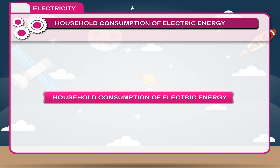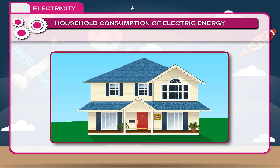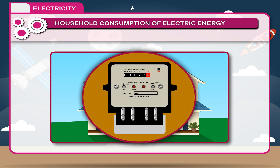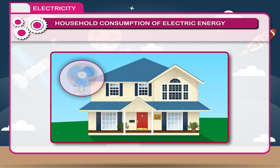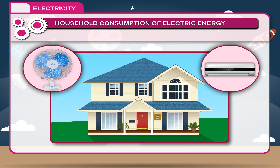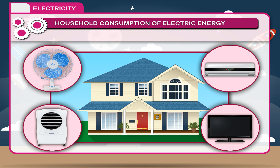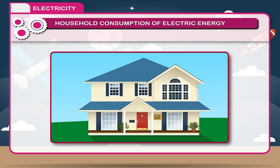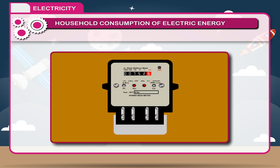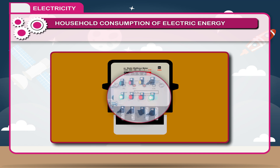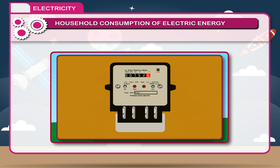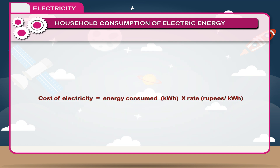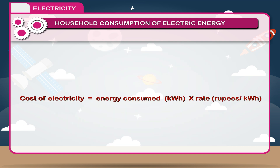Household consumption of electric energy: Every home using electricity has an electric meter which measures the amount of electric energy consumed by various appliances in that home over a given period of time. The electric meter is fixed at the mains port or just outside our house.